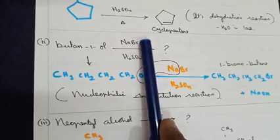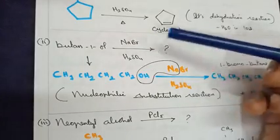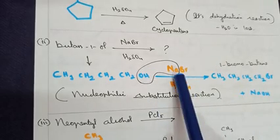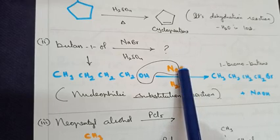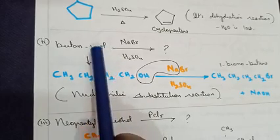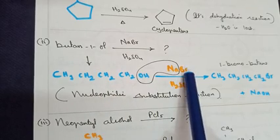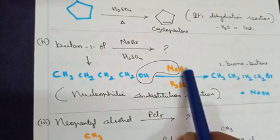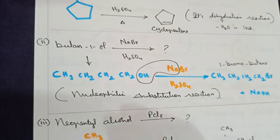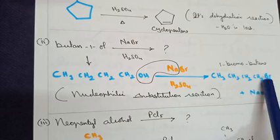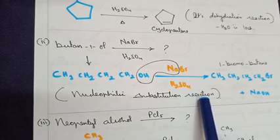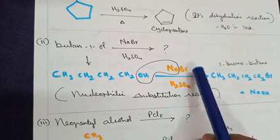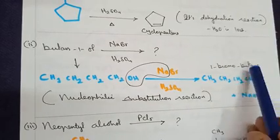Question number two: butane-1-ol (butanol), when treated with sodium bromide in the presence of H₂SO₄, undergoes reaction. In butanol, the first carbon has the OH group. Na combines with OH and leaves as sodium hydroxide; the incoming Br (bromide) occupies the OH position. The key concept: alcohol is converted into an alkyl halide via nucleophilic substitution. The CH₃CH₂CH₂CH₂ chain remains; OH is replaced by bromide. The IUPAC name of the product is 1-bromobutane, plus sodium hydroxide.